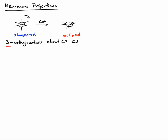Let's put this to practice by looking at 3-methylpentane about the C2-C3 bond. Carbon 2 is the front carbon and carbon 3 is the rear carbon. Let's draw out the wedge-dash drawing of 3-methylpentane. Pentane is C5, which is our parent chain. We draw carbons 1 through 5, and at the 3-position we have a methyl group.